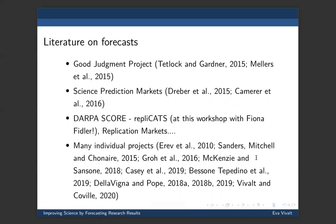There's a bigger literature on forecasts. There's the Good Judgment Project and some science prediction markets. There's also the DARPA SCORE project, where a bunch of teams like Replication Markets were working on that. I believe yesterday at this workshop Fiona Fidler was speaking - I was teaching at that time so I didn't see it, but I know her work very well because she's in Melbourne and we've chatted quite a bit on using forecasts to predict which results will replicate. This is a huge, well-funded initiative, and I'm really excited to see what will come out of that in the future.